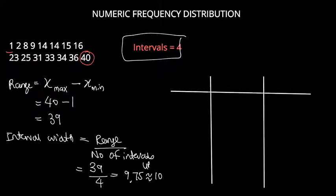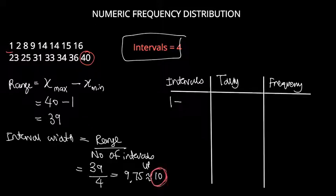So our frequency distribution will then have the intervals, a tally if you wish to tally the data values, and the frequency—in other words how many data values lie within each one of the intervals. We start our interval with the smallest data value which is 1, and then we include 10 units in this interval because our width here is 10.